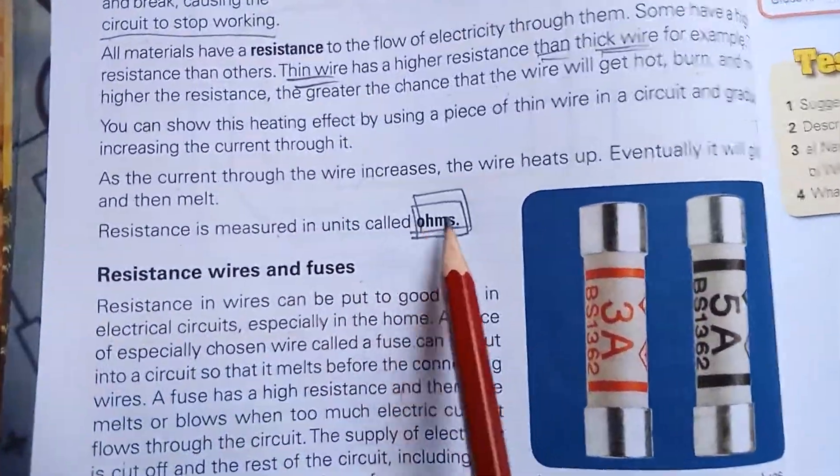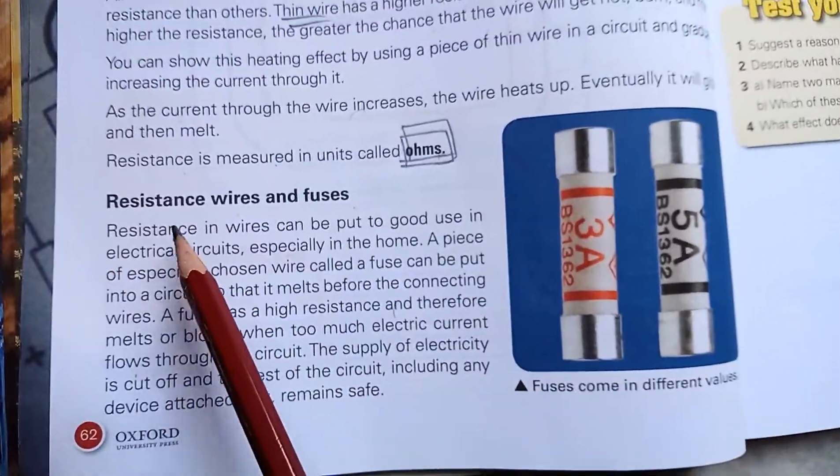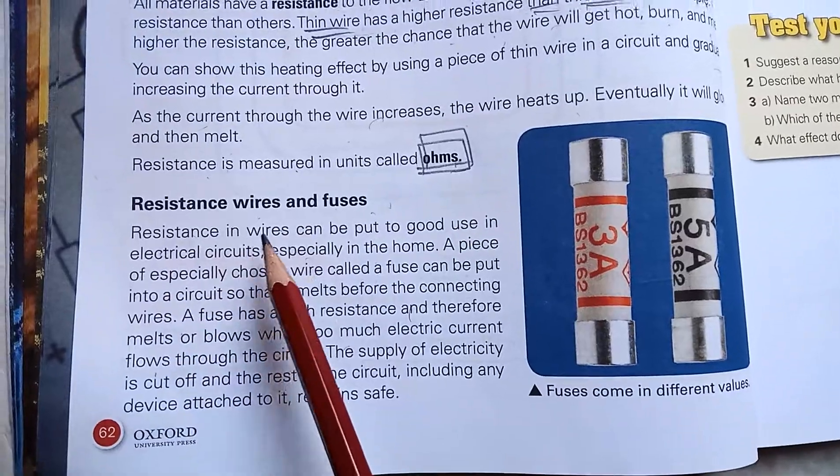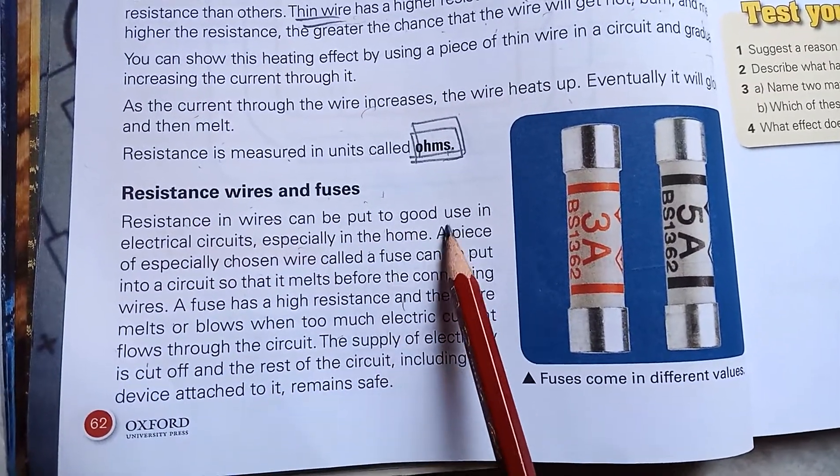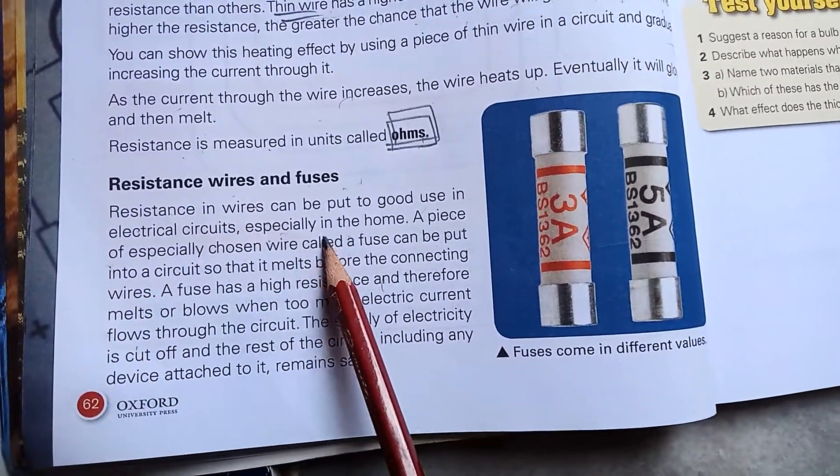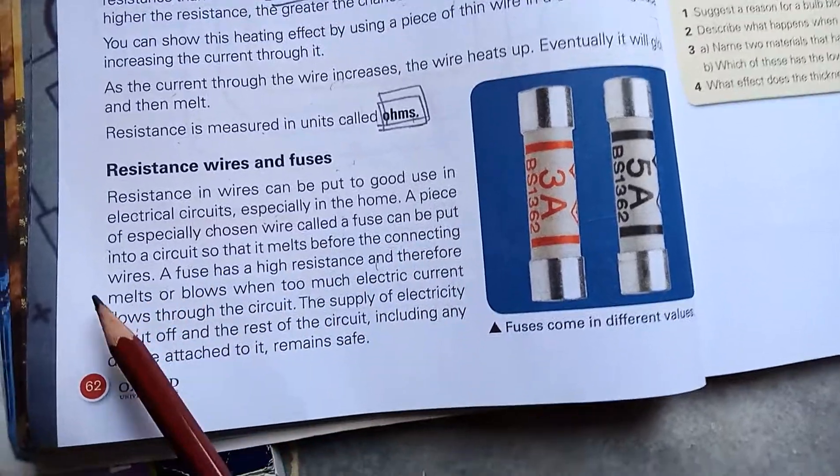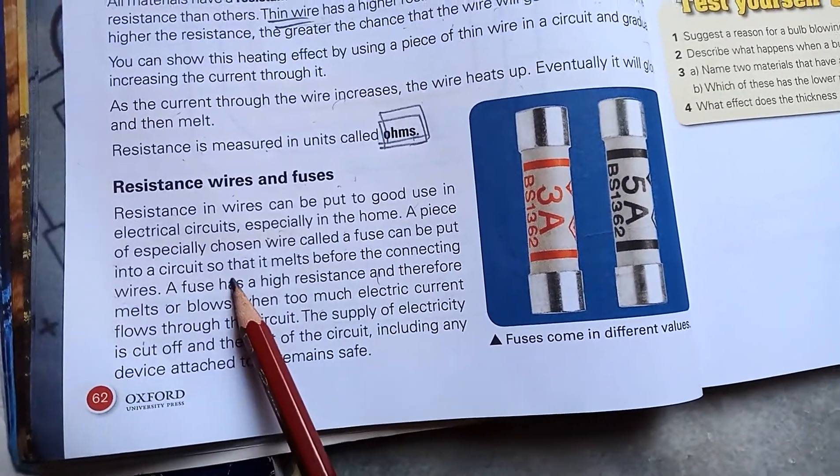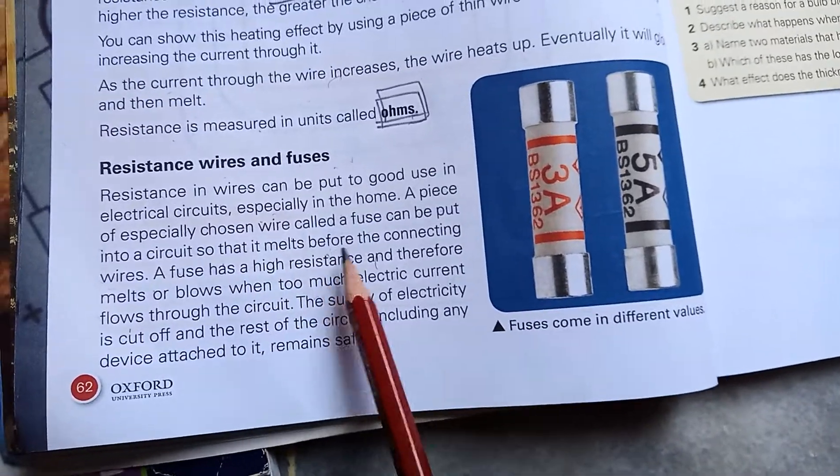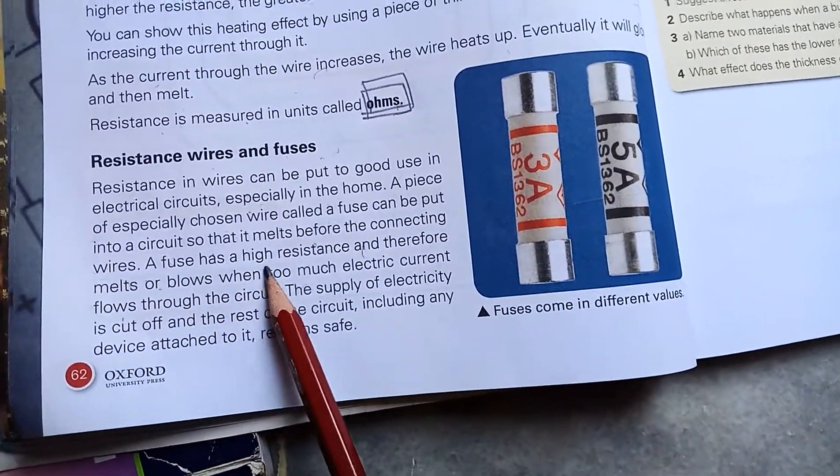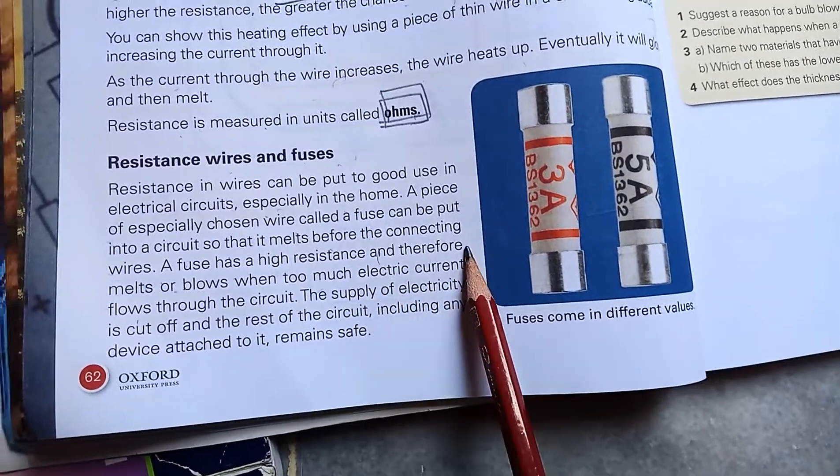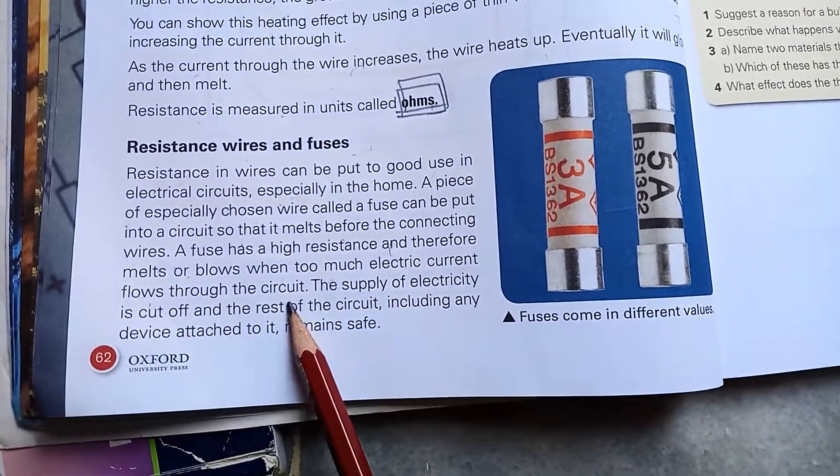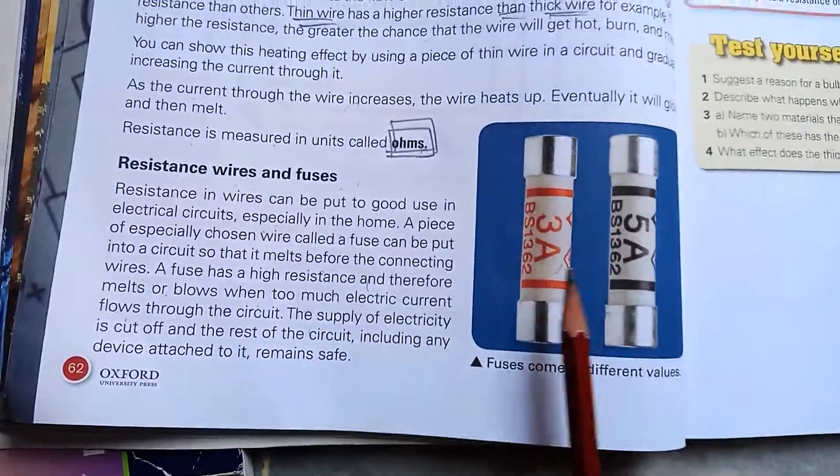Resistance wires and fuses: Resistance in wires can be put to good use in electric circuits, especially in homes. A piece of specially chosen wire called a fuse can be put into the circuit so that it melts before the connecting wire. A fuse has high resistance and therefore melts and blows when too much electric current flows through the circuit.